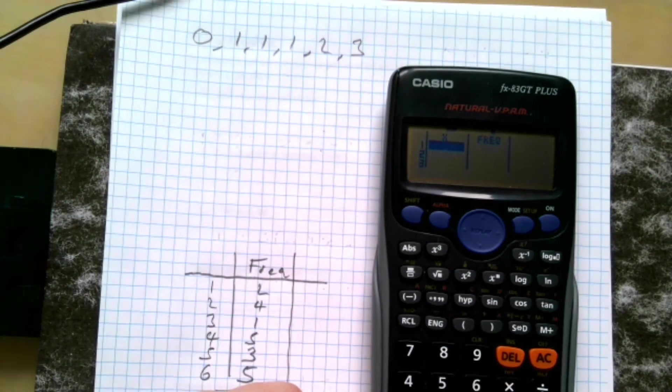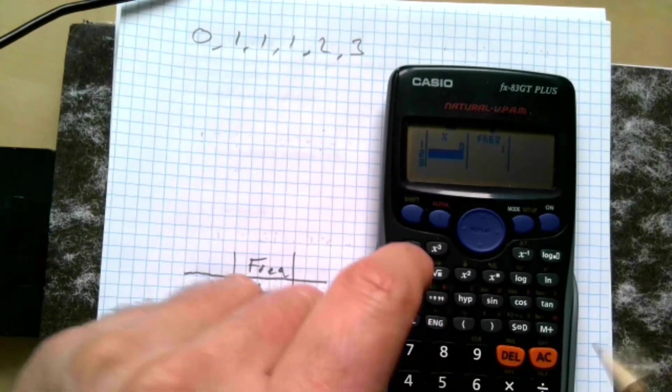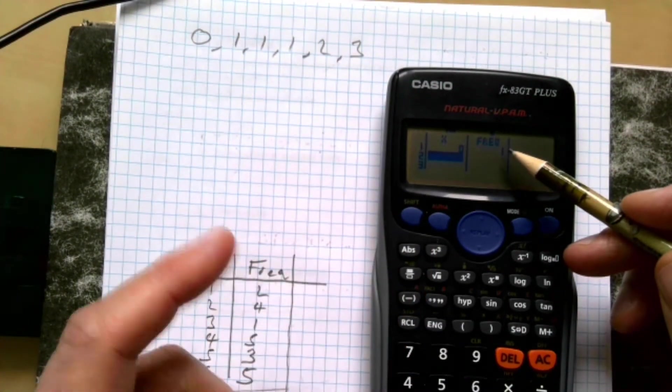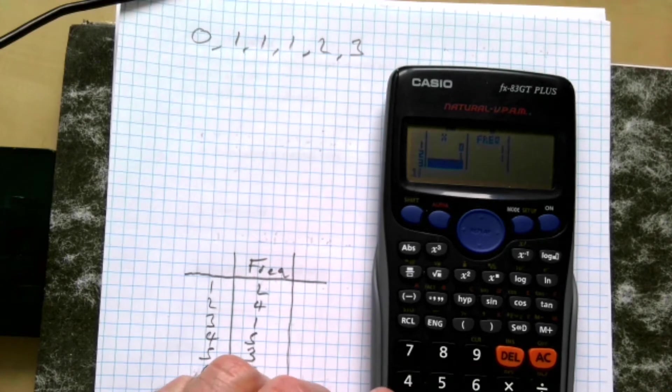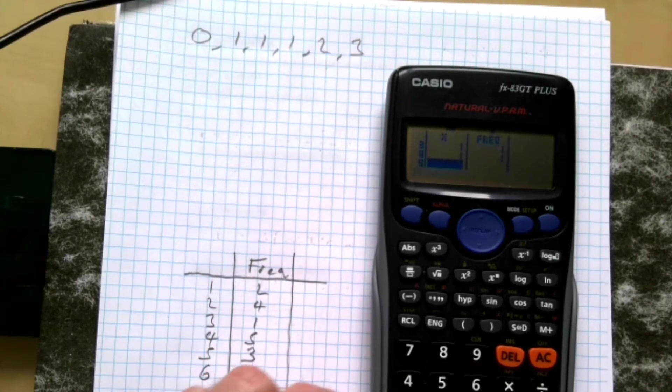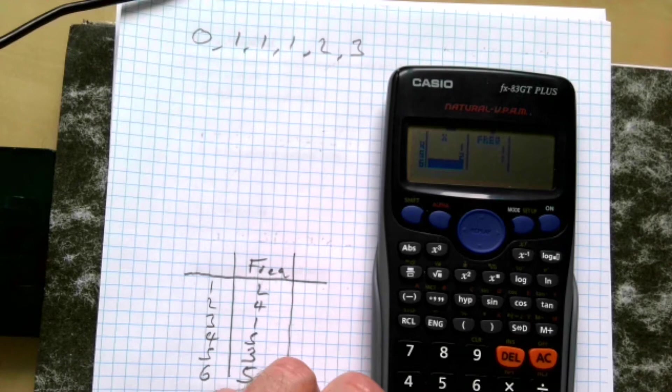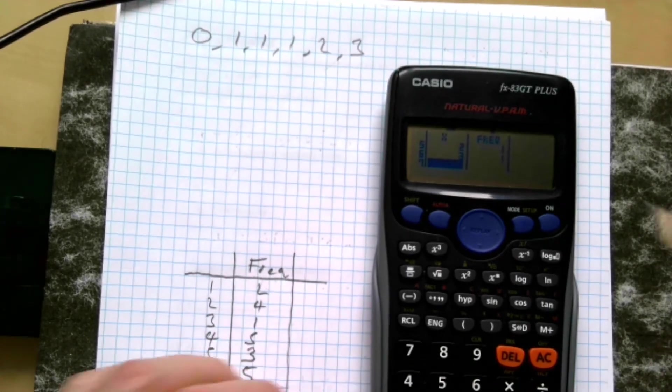So whenever we hit each of these things in, I'm going to go zero. You can't quite see it. Hit equals, so my zero appears and it just gives you a frequency of one, so it's fine. One, one, one, two, and three.